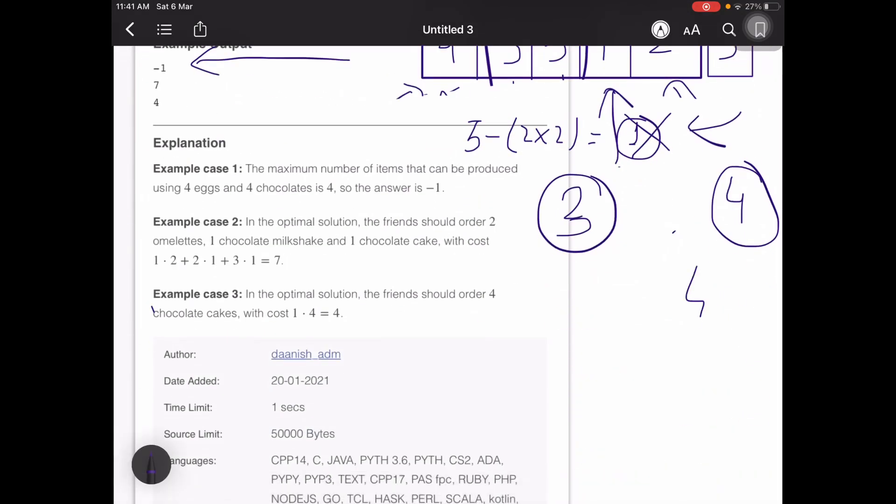I have 4 chocolate bars remaining, so 4 minus 3 which is 1, I have sufficient amount of chocolate bars. So we just order it in this way to create 4 items: we ordered 2 omelets, 1 chocolate cake, and 1 chocolate milkshake. This is the optimum solution.